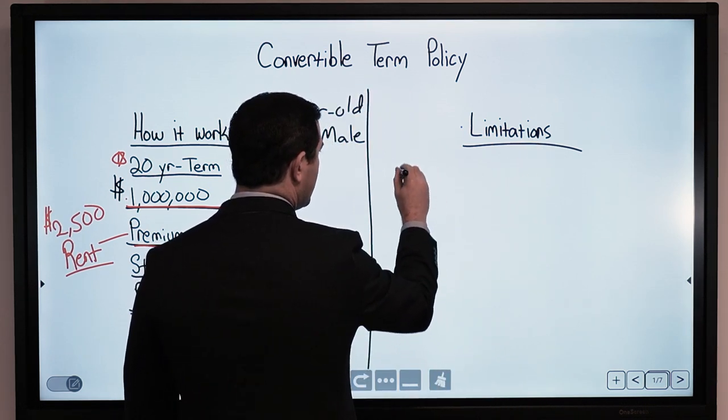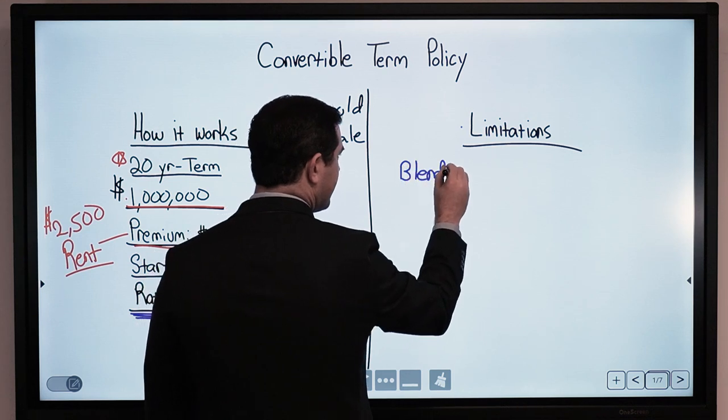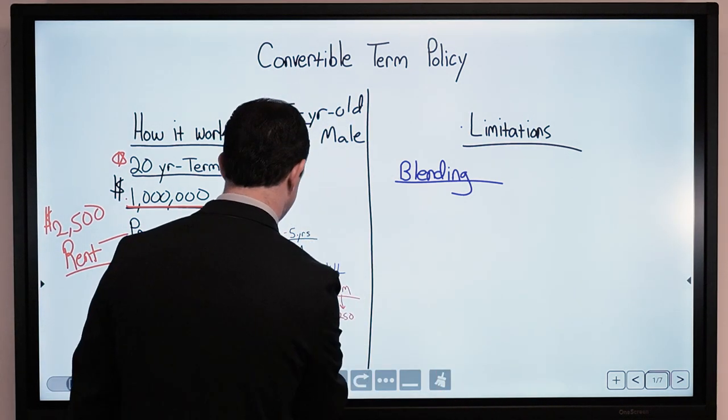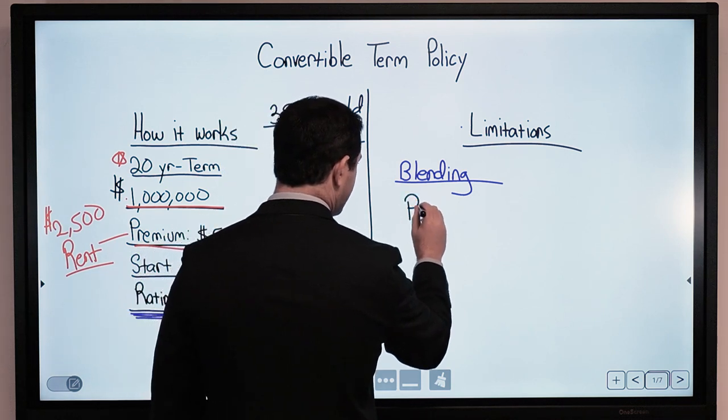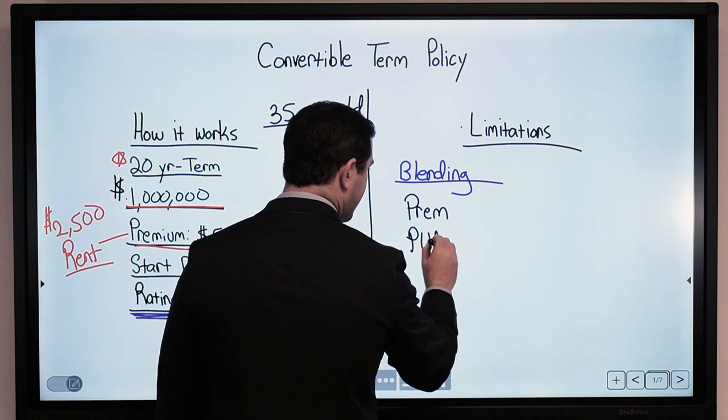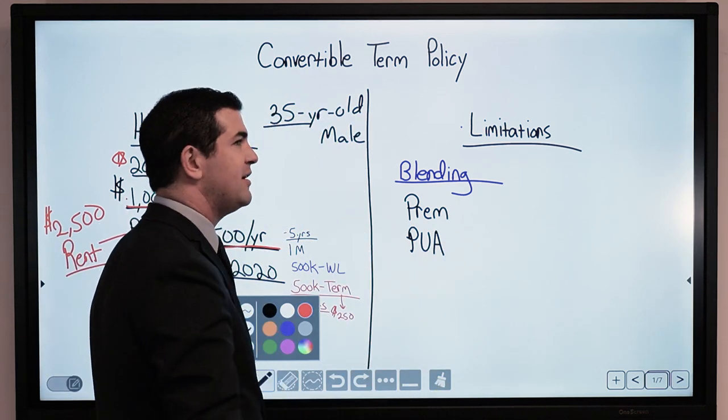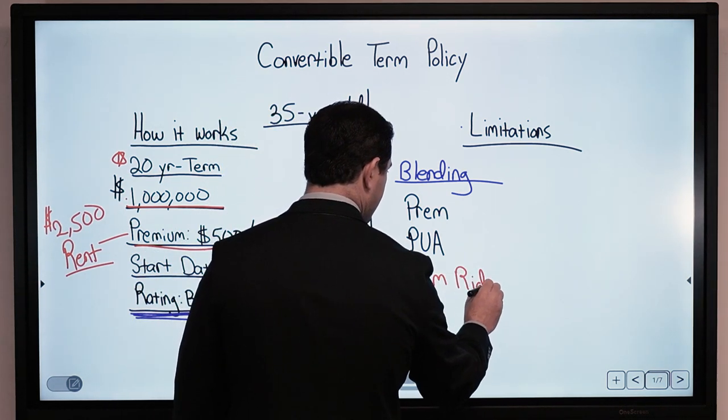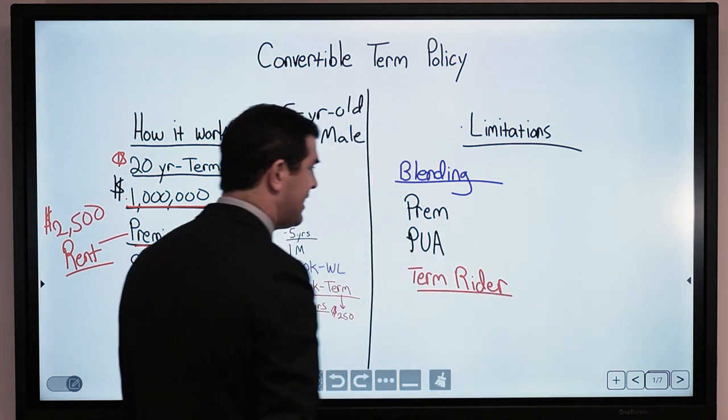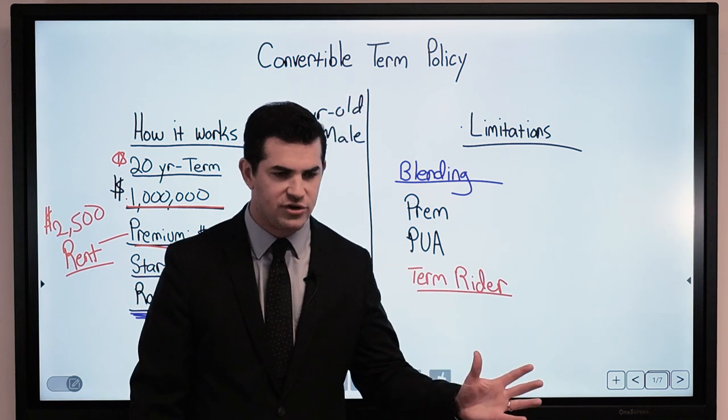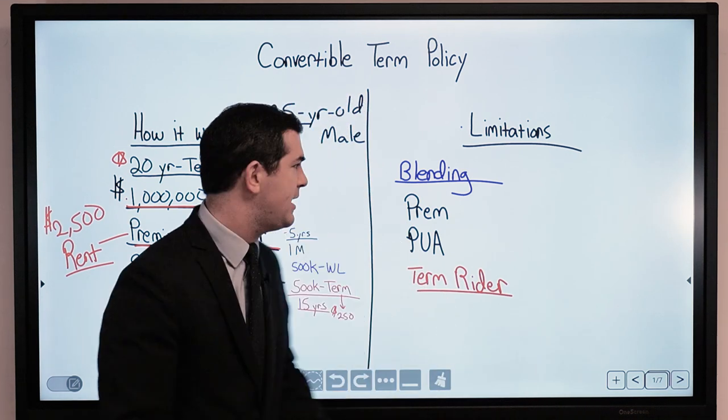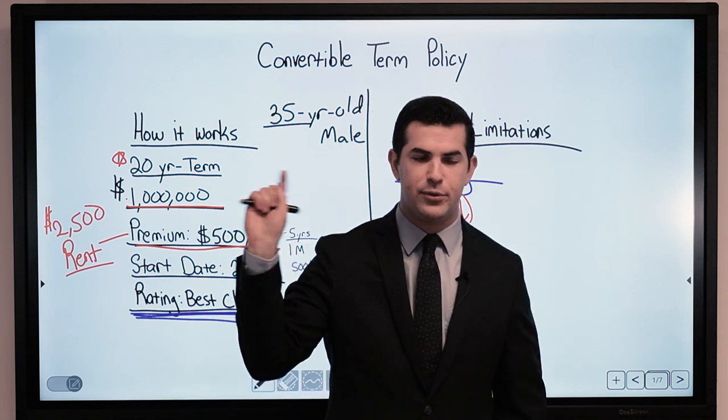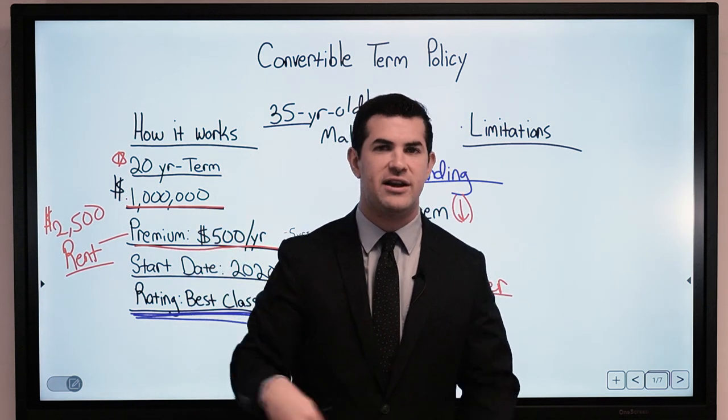So here, limitations with a convertible term typically have to do with policy blending. So blending, we talk about this frequently, it has to do when we design a life insurance policy, my money can go where? I'm not going to go through all the details here, premium or the PUA component. Now when we design a policy for maximum cash value from start to finish, we are frequently considering and utilizing a term insurance rider. A lot of times that is a fit, it's a cost-efficient way to raise my MEC limit and keep my premium low. Because the premium eats up the bulk of your cash value, in particular during the first year, and sometimes the first and second year, depends on the product.